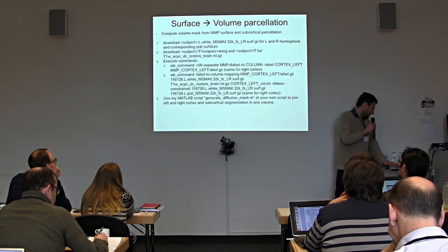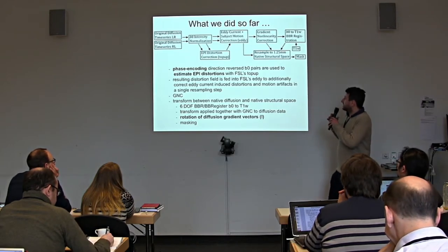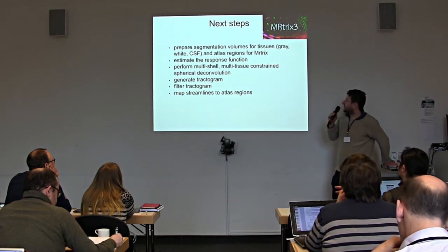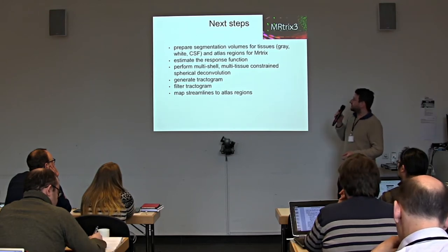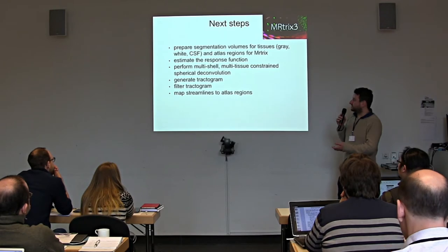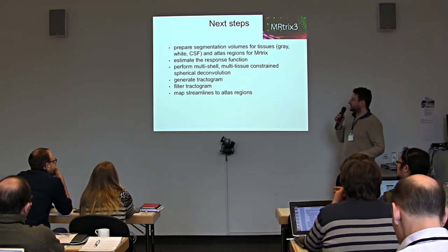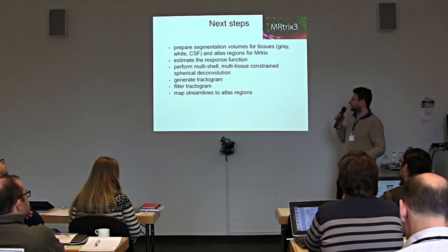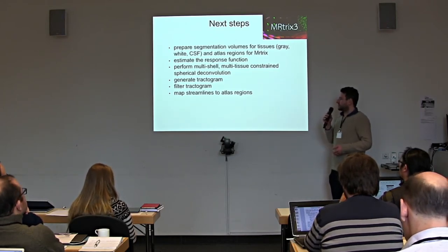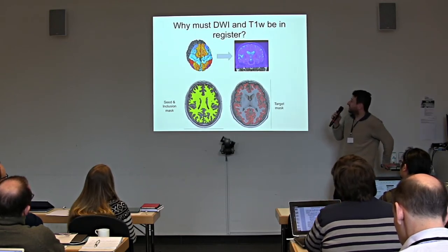Diffusion tractography: if we used the HCP pipeline, we already did a lot of pre-processing. We also have the possibility to do pre-processing within MRtrix. The next steps in MRtrix are preparing segmentations to guide tractography, aggregating the tractogram, estimating a response function — the assumed diffusion signal for a single coherently oriented fiber bundle — performing deconvolution of the diffusion signal into a distribution of fiber orientations, performing tractography, filtering the tractogram for a biologically more suitable approximation of connection strength, and mapping streamlines to atlas regions.